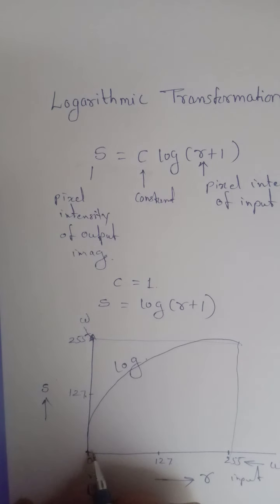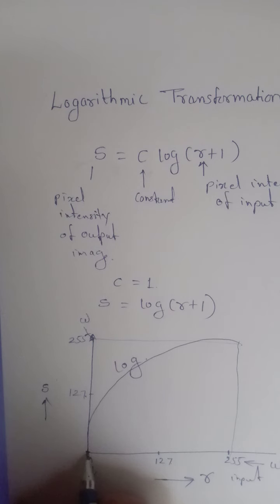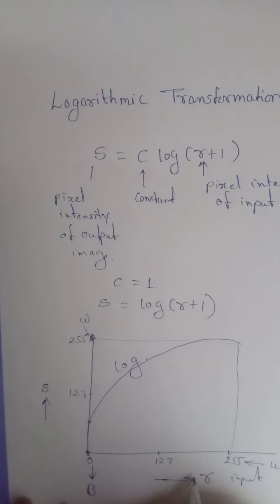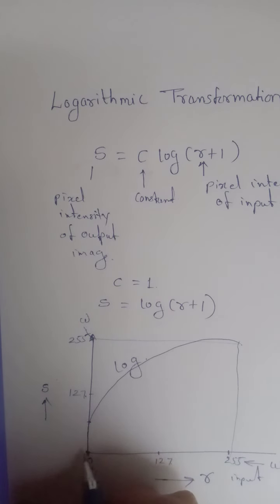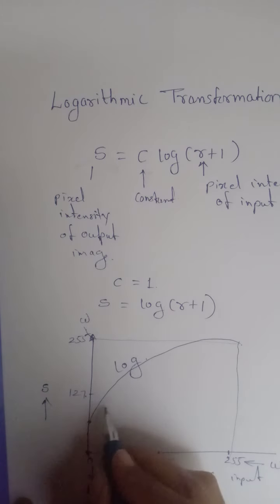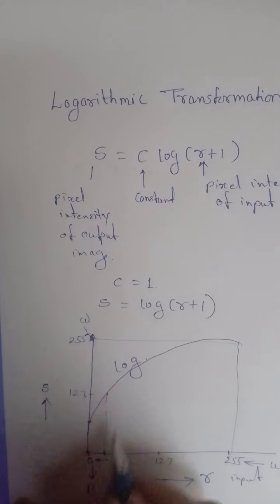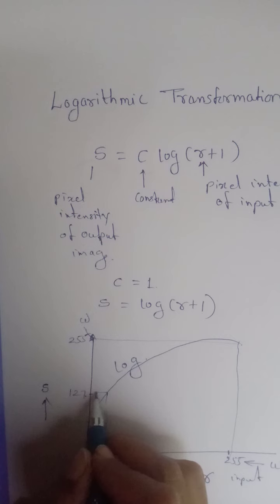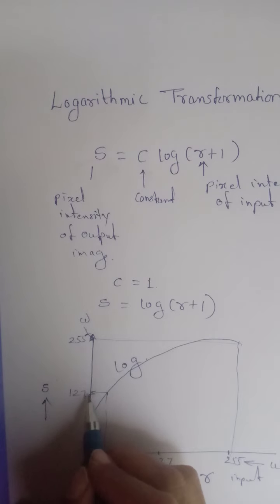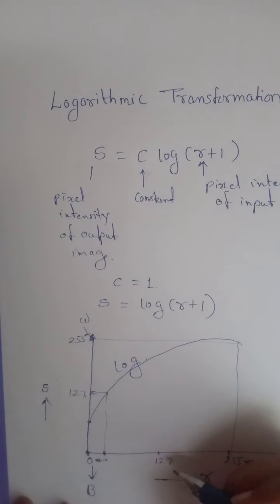If we observe carefully, you can see that even if the intensity of the input image is very close to 0 — meaning the input pixel is nearly black — the intensity of the output image is increasing, going towards white.